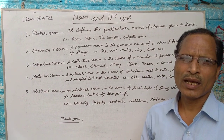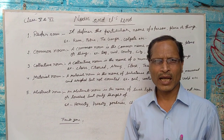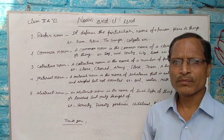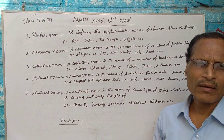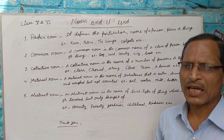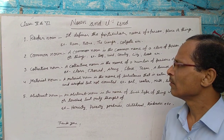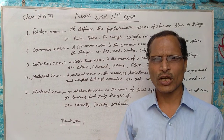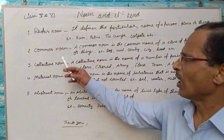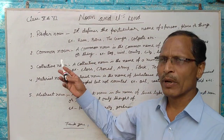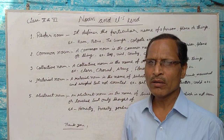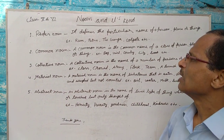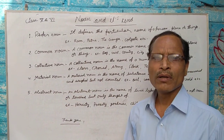Students, as you know, there are five kinds of noun: proper noun, common noun, collective noun, material noun, and abstract noun. There are five kinds of noun.